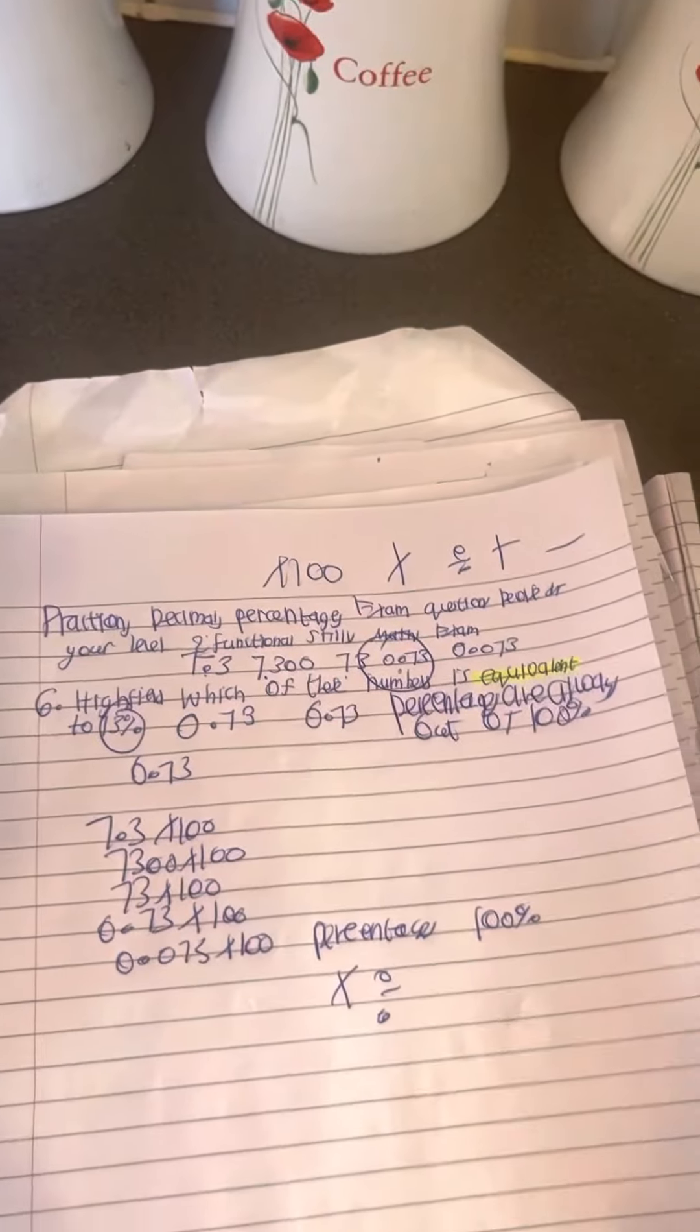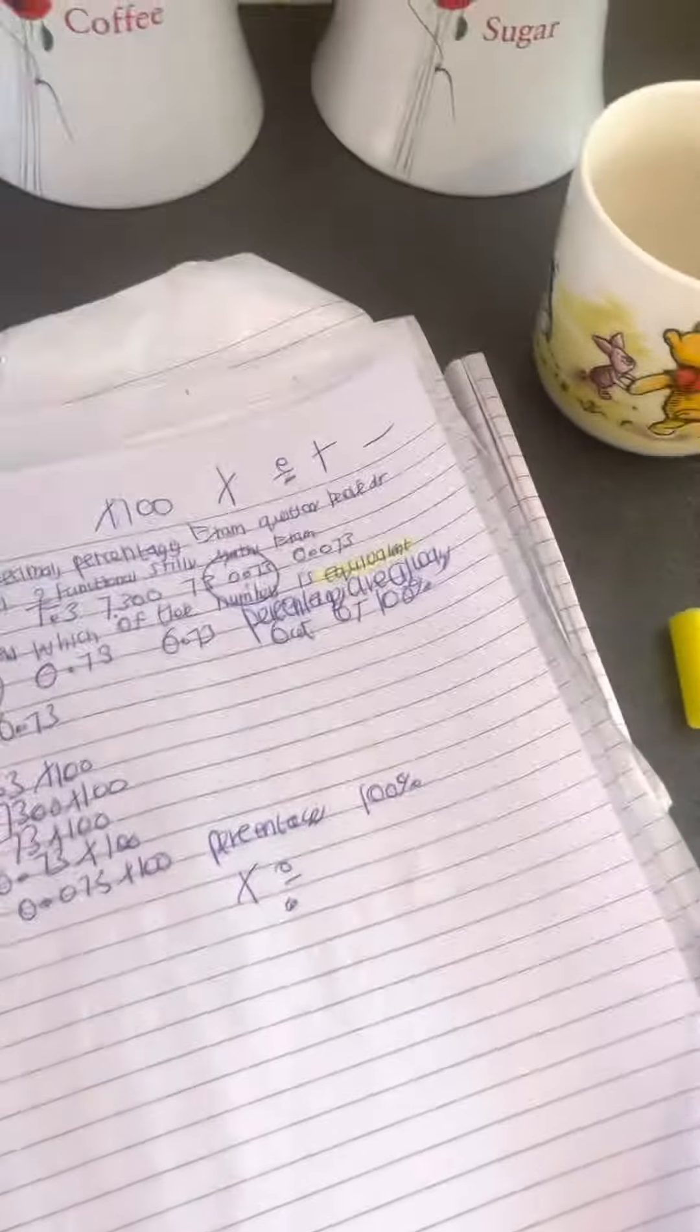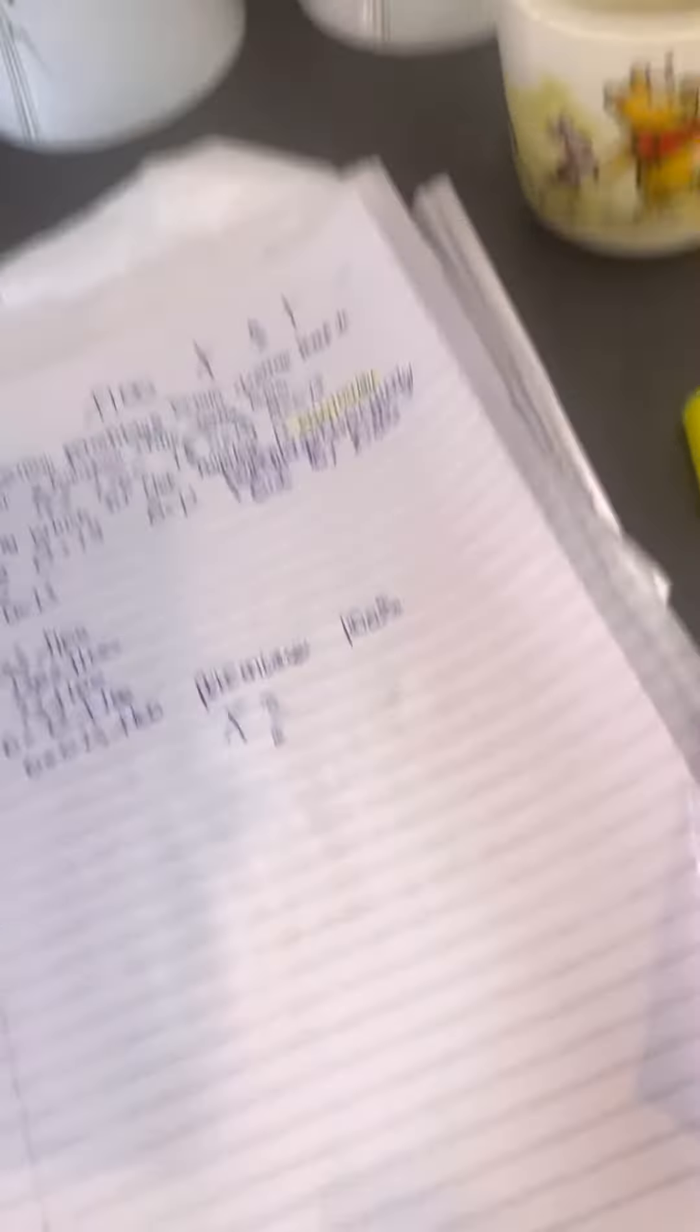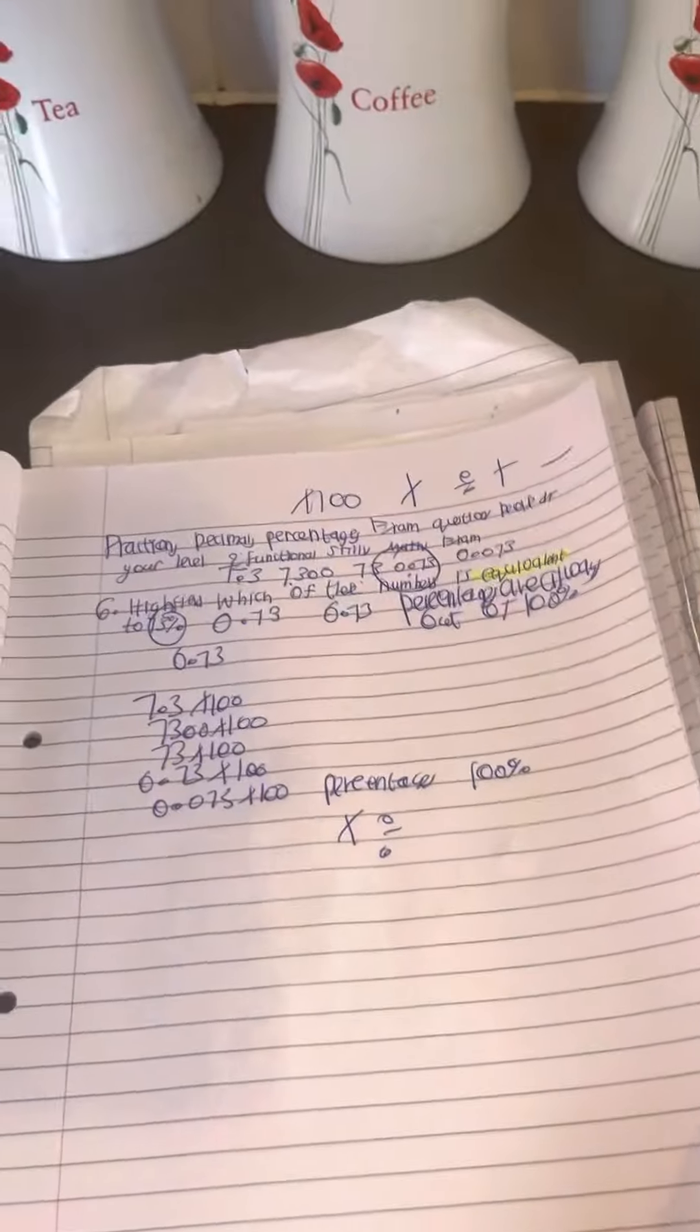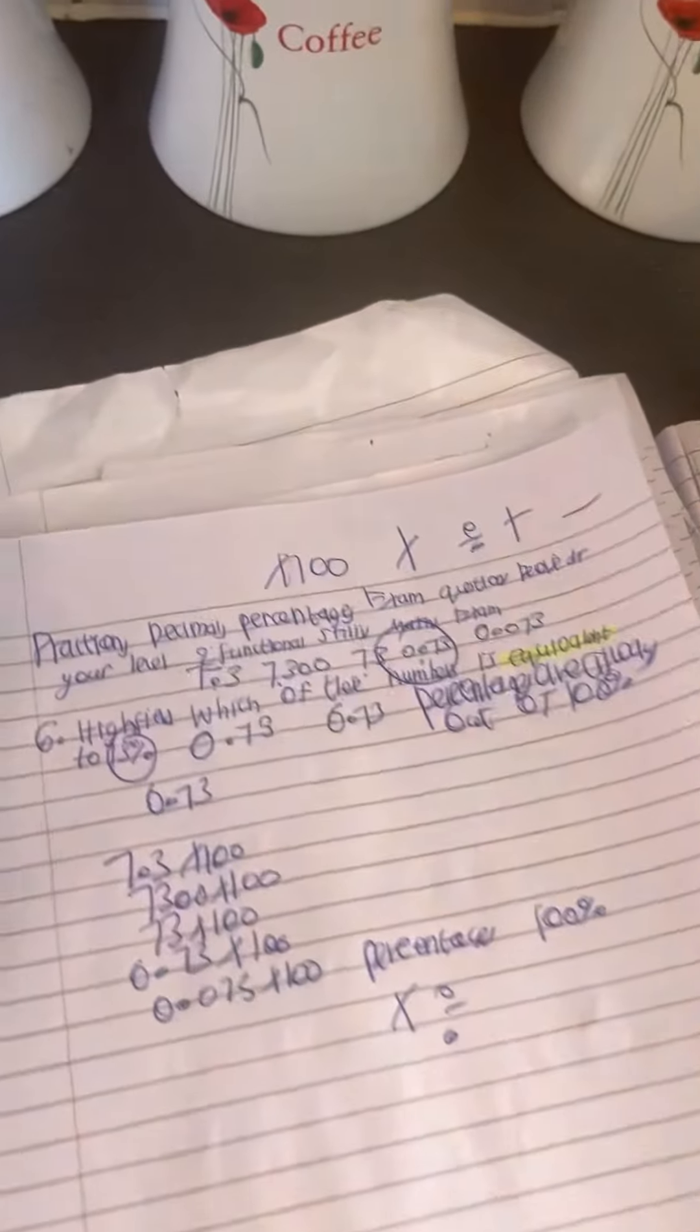It depends what the question is asking you to do, so make sure you highlight the key information because highlighting the math question is very important, especially if you're doing level 2 functional skills maths, or level 1, or entry 3, or whatever level you're working at. Just make sure you hit the heart of the question and read the question three times.